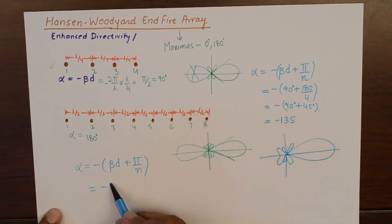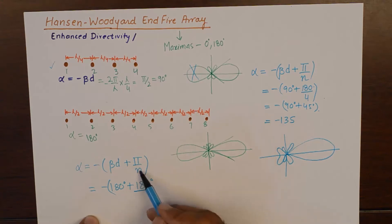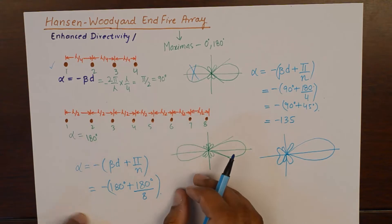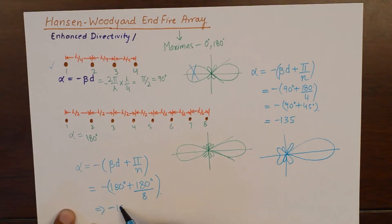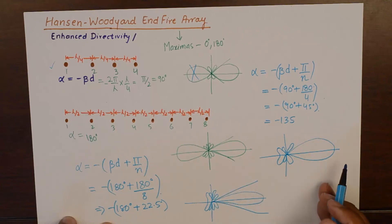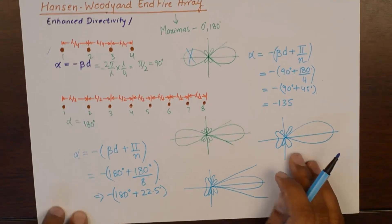And our previous beta d was 180 degrees. And pi by n results in 180 degrees upon number of elements is 8. So, it gives me an angle of an additional, I guess, 22.5 degrees. Additional phase shift needs to be added to every consecutive element in the array. And this will give us a super directional array, something like this, with an enhanced directivity in the east direction and side lobes totally suppressed.